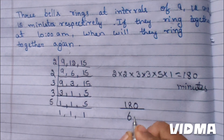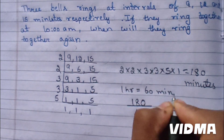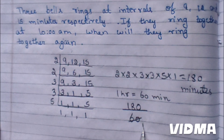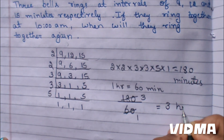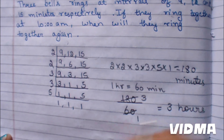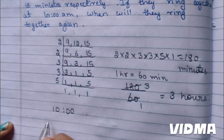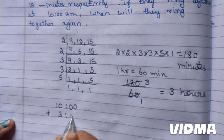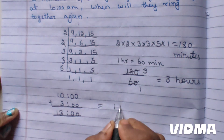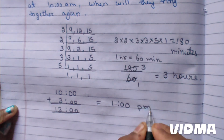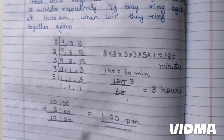180 minutes divided by 60 minutes equals 3 hours. So the bells will ring together after 3 hours. 10 AM plus 3 hours equals 13:00, which means 1 PM. After 12, 1 becomes 13, 2 becomes 14 — that is why the answer is 1 PM.